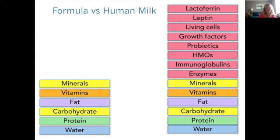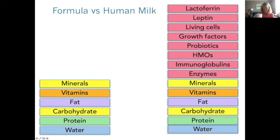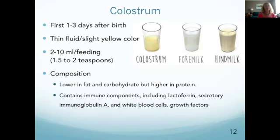This slide compares the composition of formula to human milk. Both have water, protein, carbohydrate, fat, vitamins, and minerals — formula has been manufactured to copy these as closely as possible. But human milk contains many additional components. The purpose of this slide is to show visually that human milk is far more complex than formula — it's a biological fluid produced specifically to nurture young, and it's remarkable. We'll talk about some of those components throughout the lecture.